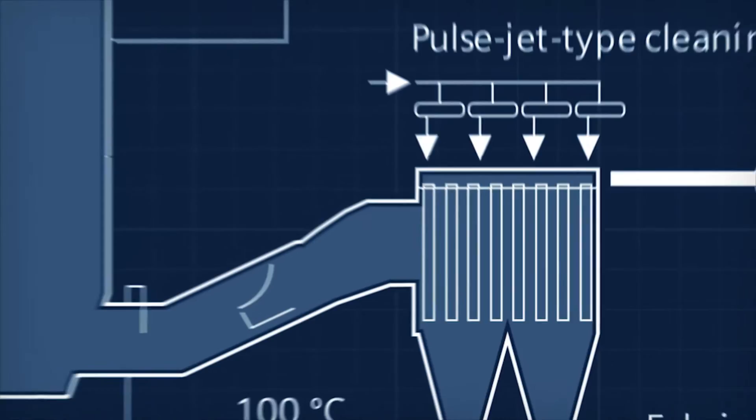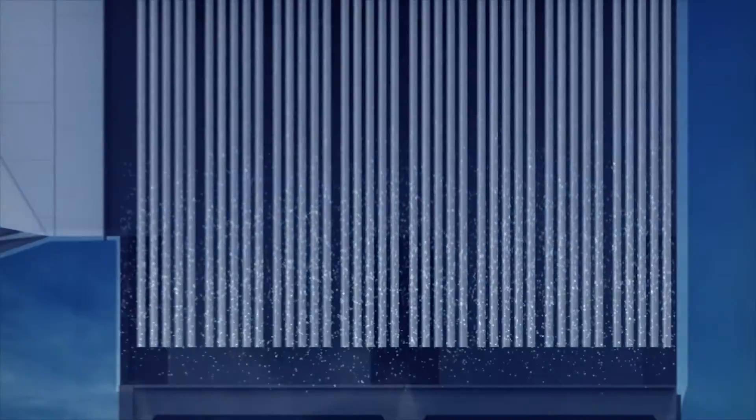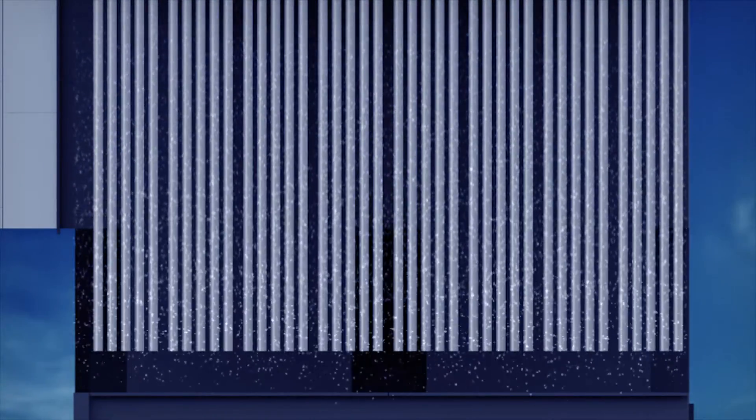After exiting the conditioning reactor, the off gas stream passes through bag filters equipped with high-performance fabrics where the dust is removed.